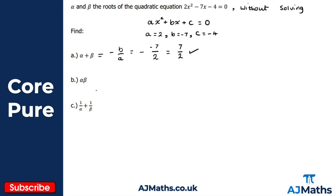For part b, we're looking for the product of the roots. Using c over a: c is minus four, a is two, so minus four over two gives us minus two. The product of the roots, alpha beta, equals minus two.